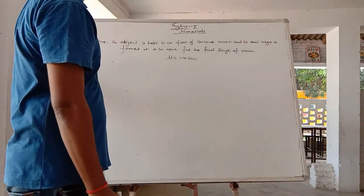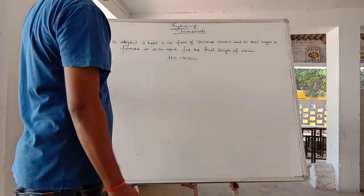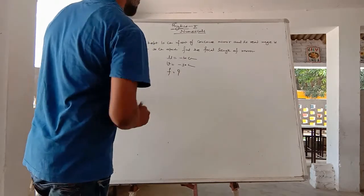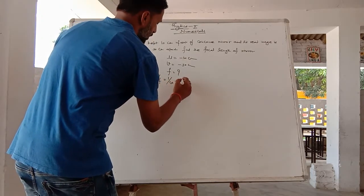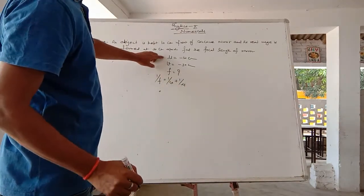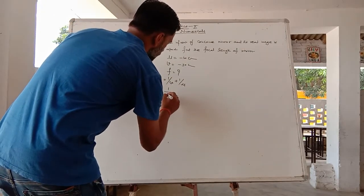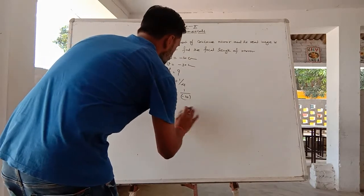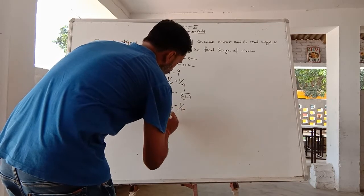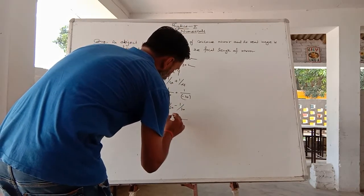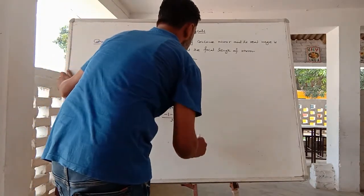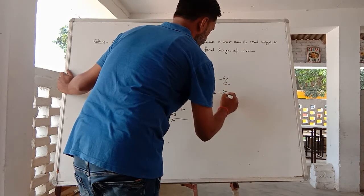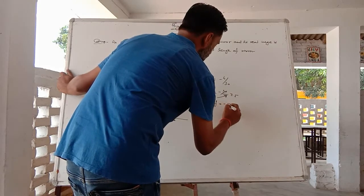V is equal to minus 30. Focal length formula: 1 upon f is equal to 1 upon v plus 1 upon u. 1 upon f is equal to minus 1 upon 30 plus minus 1 upon 10. Taking LCM 30, minus 1 minus 3, so 1 upon f is equal to minus 4 upon 30. F value is minus 30 upon 4, which is minus 7.5 cm.